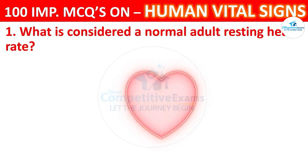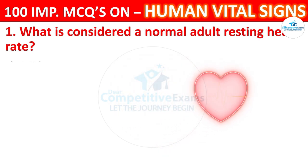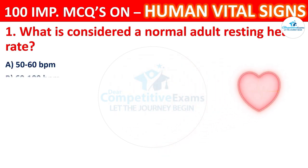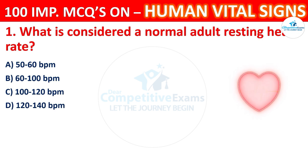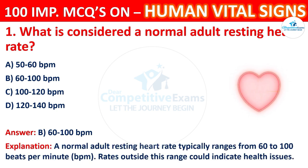Question 1: What is considered a normal adult resting heart rate? Options: 50 to 60 beats per minute, 60 to 100 beats per minute, 100 to 120 beats per minute, or 120 to 140 beats per minute. The correct answer is B, 60 to 100 beats per minute. A normal adult resting heart rate typically ranges from 60 to 100 beats per minute. Rates outside this range could indicate health issues.